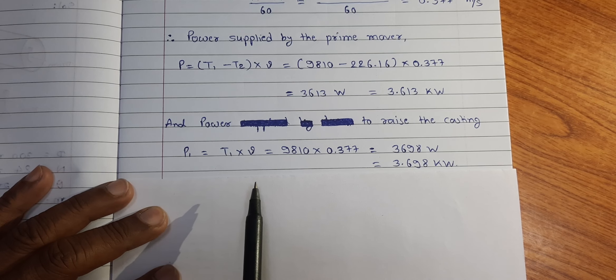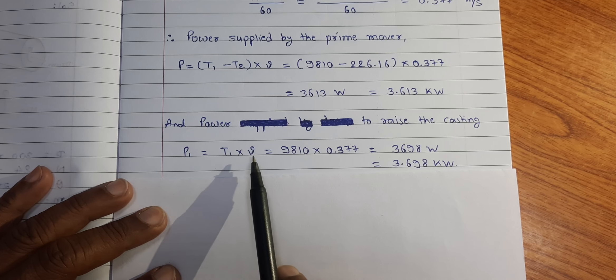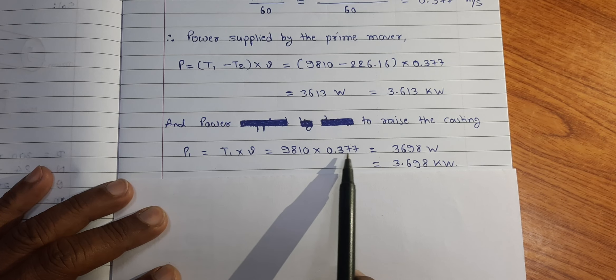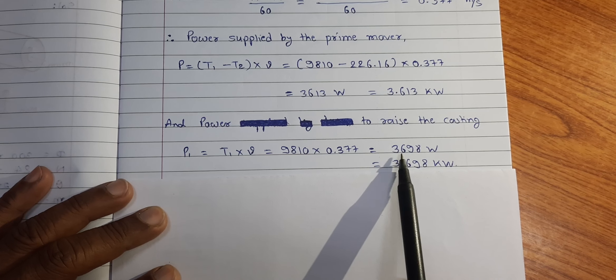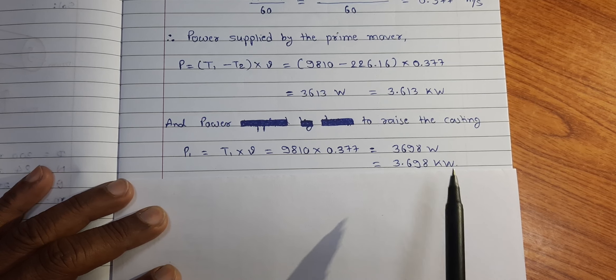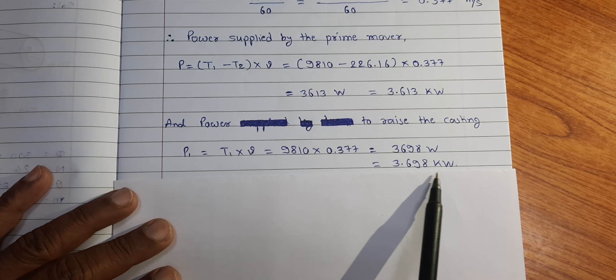So, substituting these two values T1 that is 9810 into V is equal to 0.377. We found P1 is equal to 3698 Watt that is equal to 3.698 KW.